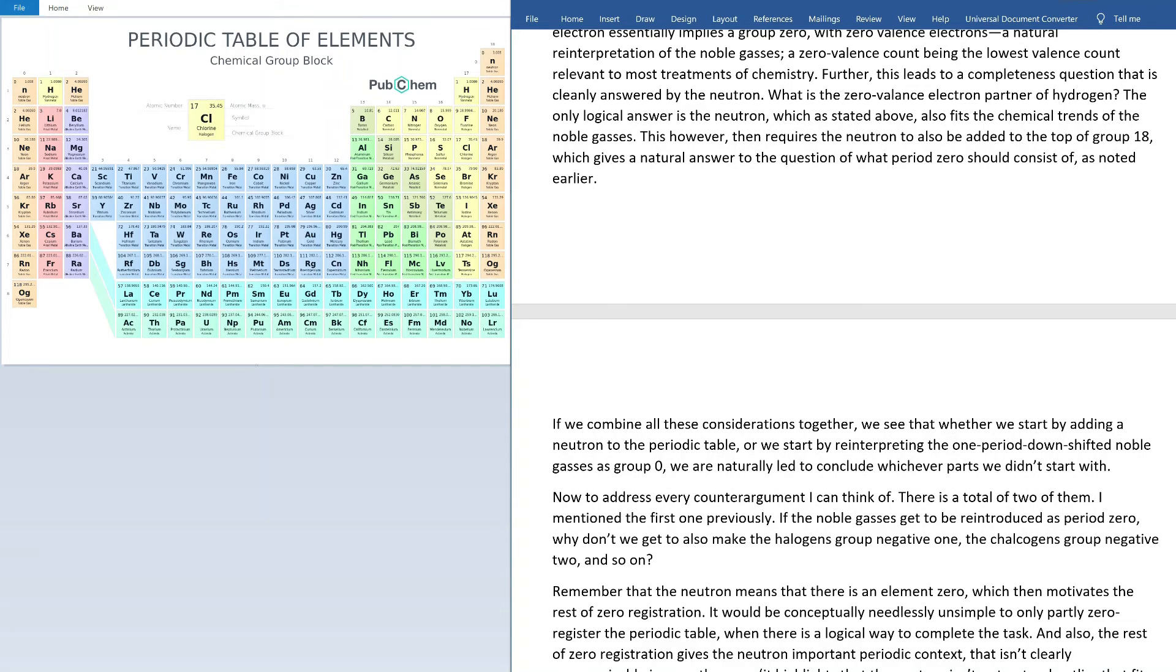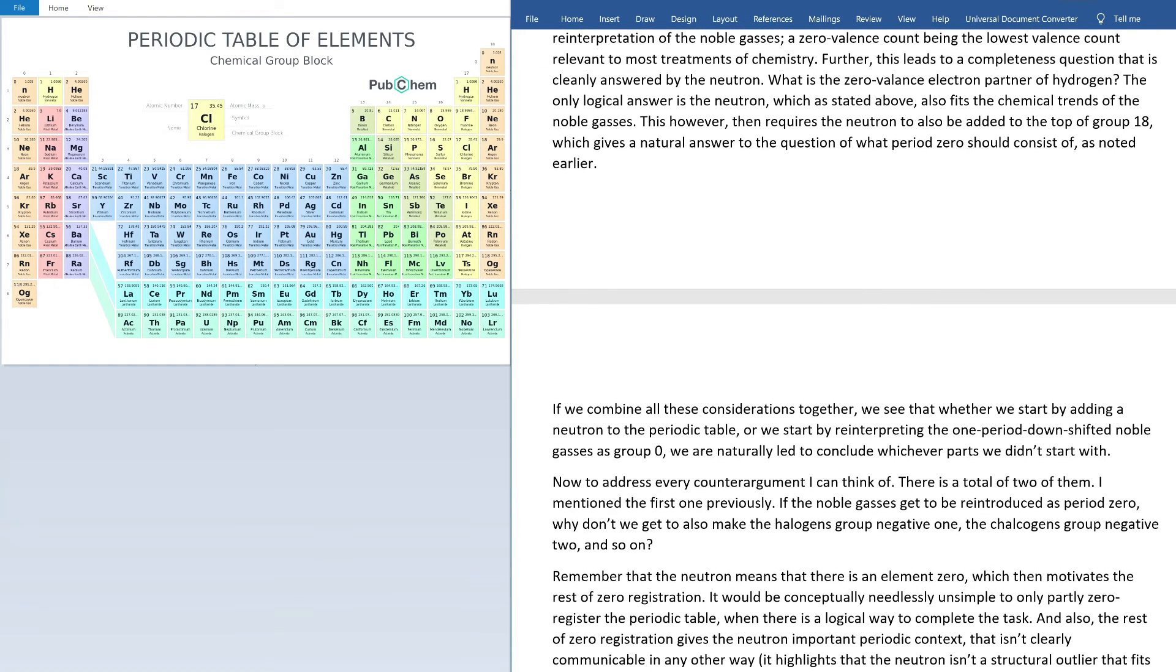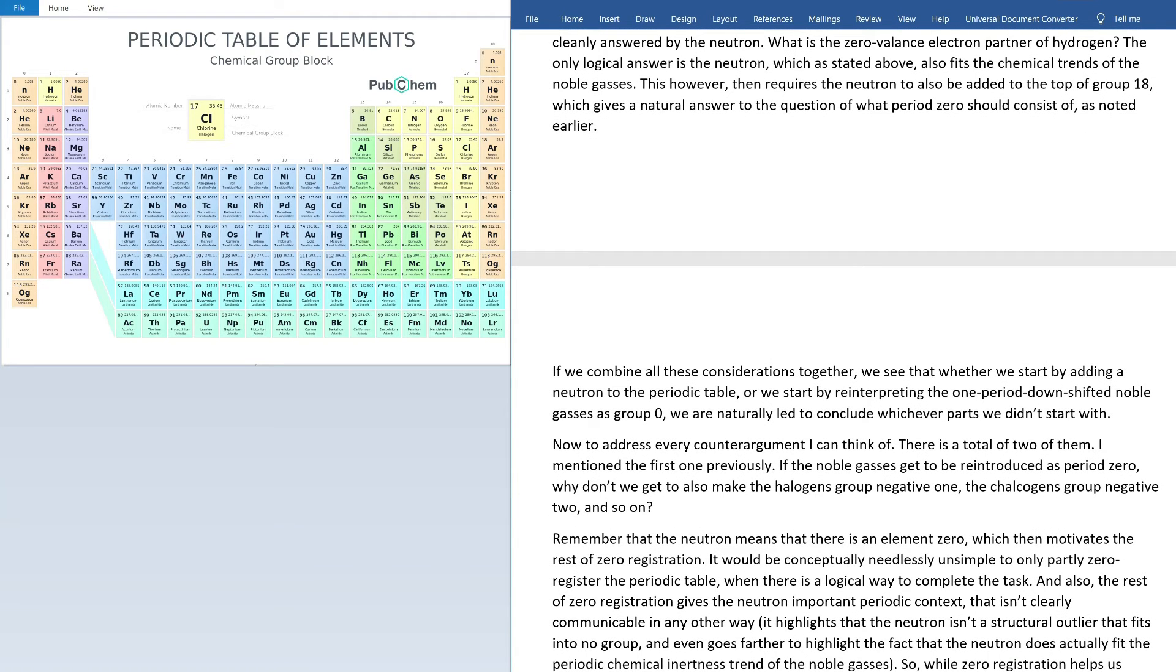Further, this leads to a completeness question that's cleanly answered by the neutron, i.e. what is the zero valence electron partner of hydrogen? The only logical answer is the neutron, which, as stated above, also fits the chemical inertness trends of the noble gases which I have placed below them in group zero. This, however, then requires the neutron to also be added to the top of group 18, which gives a natural answer to the question of what period zero should consist of, as noted earlier. Now, if we zoom out a little bit and we combine all of our considerations so far together, we see that whether we start by adding a neutron to the periodic table, or we start by reinterpreting the one period downshifted noble gases as group zero, we are naturally led to conclude whichever parts we didn't start with. They really do complete each other.